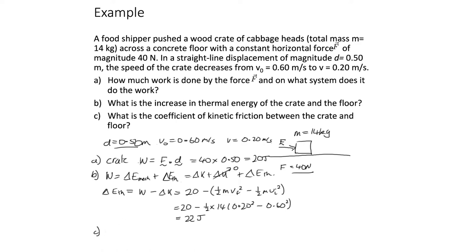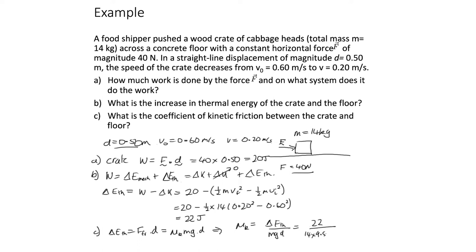Part C: what is the coefficient of kinetic friction between the crate and floor? The 22 joules goes into work overcoming friction, so: thermal energy = μk × mg × d. Rearranging: μk = ΔE_thermal / (mgd) = 22 / (14 × 9.8 × 0.5) = 0.32.